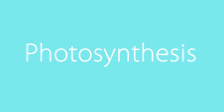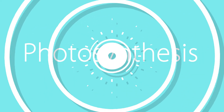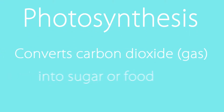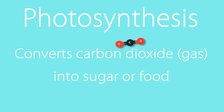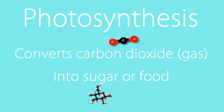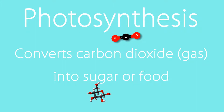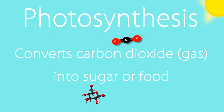Plants carry out an important process in the chloroplast called photosynthesis. Photosynthesis converts carbon dioxide gas into sugar or food, and this process requires sunlight as the energy source.